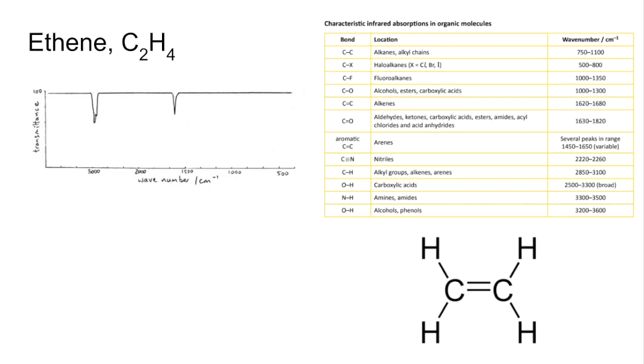We'll look at ethene now. Looking at the displayed formula we've got two types of bond: C-H and C double bond C. You can see we've got that C-H absorption again, and just over 1500 we've got the C double bond C. There's the wavenumber range 1620 to 1680.